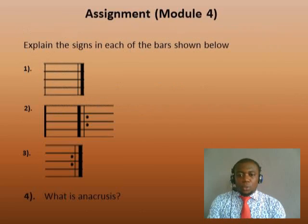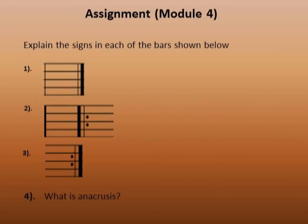Now we do the module 4 assignment. Please take your time and go through these questions, try as much as possible to answer them correctly, and approach your choir master or your music director for grading. At this point you can pause the video, take your time, go through the questions and answer them. Make sure you get approval from your choir master, music director, or tutor before you progress to the next module. Thank you — we'll meet again in module 5, where we'll talk about how to interpret two-four time signature.